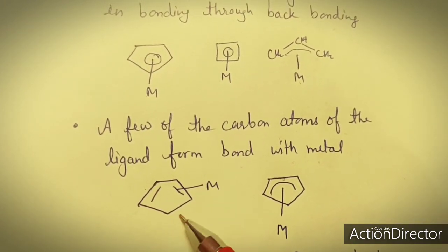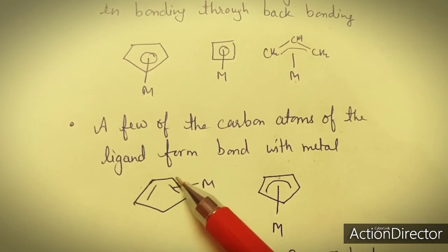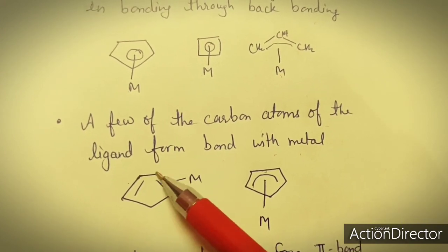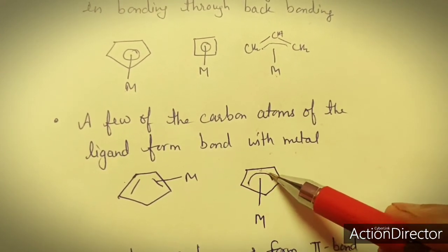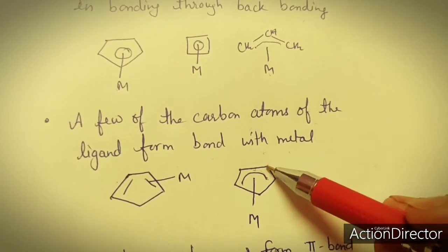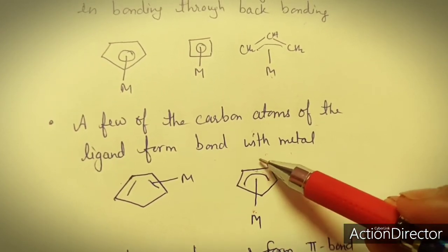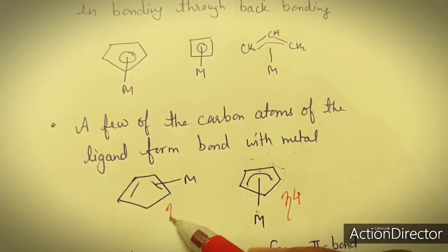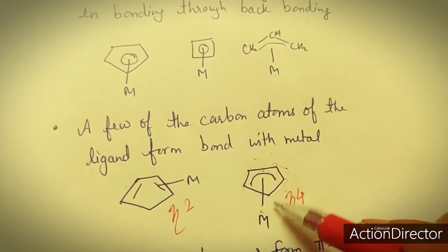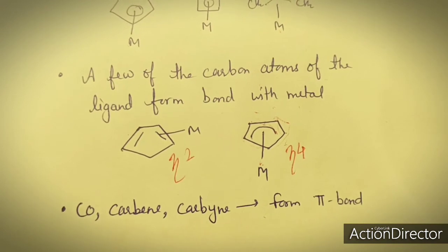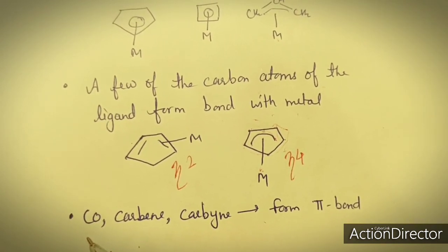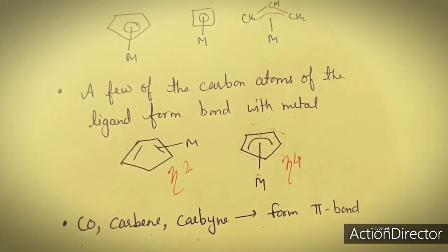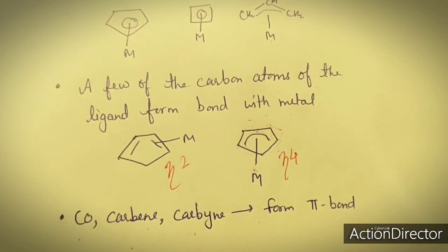Sometimes only a few of the carbon atoms of the ligand form a bond with the metal, depending on the hapticity of the ligand. For example, a five-carbon ligand may be attached to the metal center through only two carbon atoms, acting as an eta2 ligand. In another case, cyclopentadienyl with four carbon atoms attached acts as eta4 type with hapticity of four. Other pi bonded ligands include CO, carbenes, and carbynes, which can also form pi bonds with metal complexes.